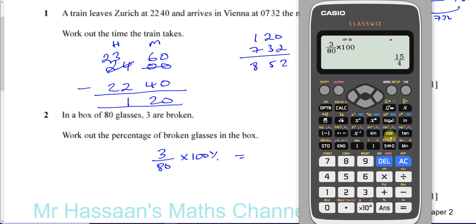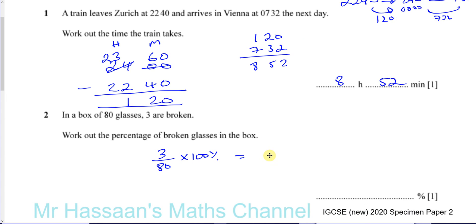So that's 15 over 4, which is 3.75%. So 3.75% of the glasses are broken. Here in the answer space, you just have to write 3.75. The percent symbol is already there in the answer space. So there we have the answer for question number two. Pretty simple.